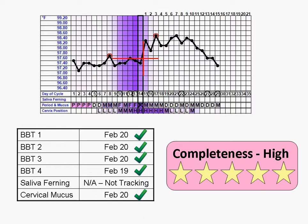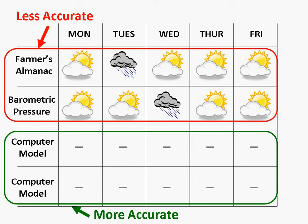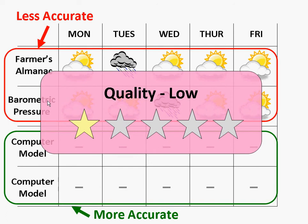The last type of confidence is quality. Quality indicates what type of information is feeding into the estimates we are using. Going back to the weather analogy, the four meteorologists' forecasts may come from four different sources. Perhaps the upper two are based on the farmer's almanac and a simple estimate using barometric pressure — these are less accurate techniques. In this example, only the less accurate forecasts are available, so the quality of this estimate would be considered low.